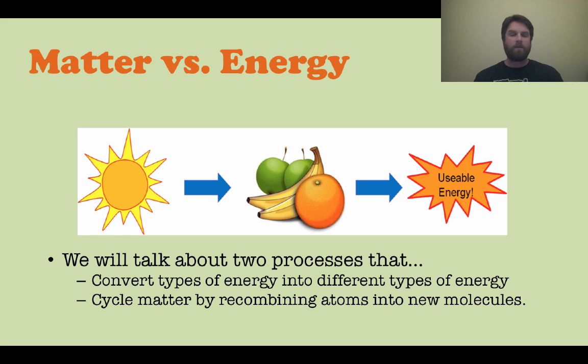We're going to talk about two different processes that convert types of energy into different other types of energy. These processes also cycle matter by recombining the atoms into new molecules. The first process we're going to talk about in this video is photosynthesis, and later on we'll talk about cellular respiration, which does things in a little bit of an opposite fashion of photosynthesis.